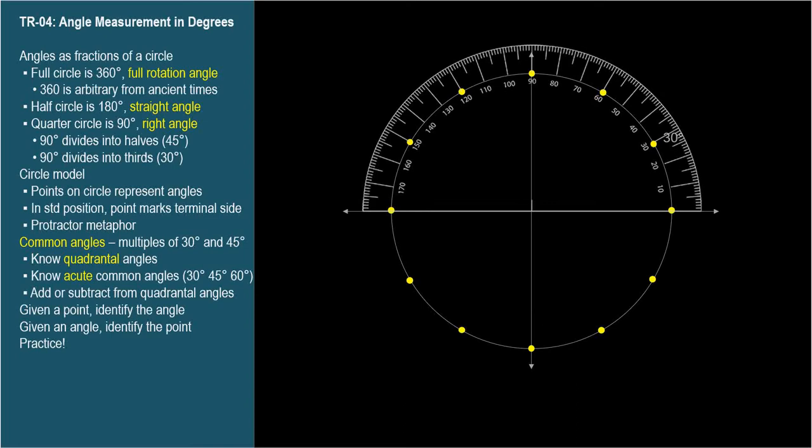We line up the initial side with the edge of the protractor and read the angle from the terminal side corresponding to a point on the protractor.